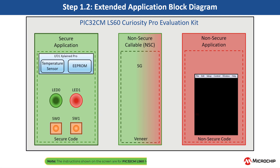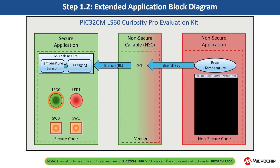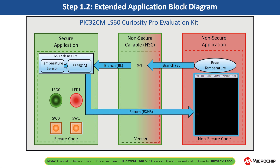Now let's see how the extended functionality is implemented. The secure mode application reads the current room temperature from the temperature sensor on the IO1 Xplained Pro Extension Kit every 500 milliseconds. The application writes the temperature readings to EEPROM and reads them when a request is received from the non-secure mode application. A green LED0 is toggled every time a temperature display request is received from the non-secure mode application. The periodicity of temperature reading can be changed to 1 second, 2 seconds, 4 seconds, and back to 500 milliseconds whenever the user presses switch SW0. Temperature readings are transferred to the non-secure mode application through non-secure callables.